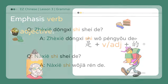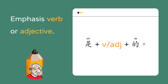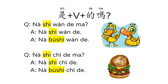The sentence pattern 是 plus verb or adjective plus 的 emphasizes the verb or adjective. Below are a few examples. Is that to play with? Yes, that is to play with. No, that is not to play with. Is this to eat? Yes, that is to eat. No, that is not to eat.